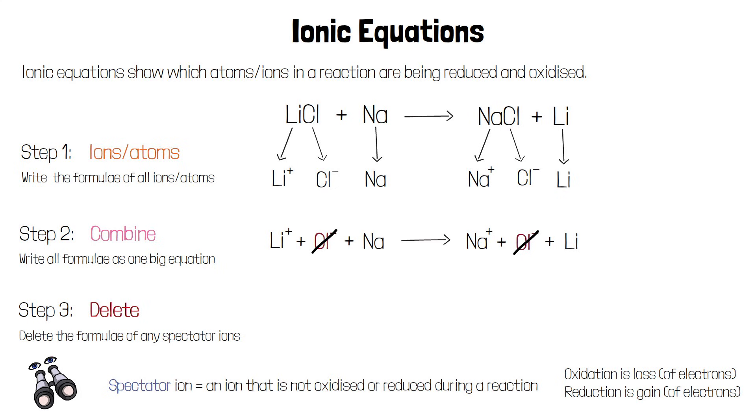Finally we can rewrite our equation without the spectator ions. For this example that would be Li plus and Na produce Na plus and Li.